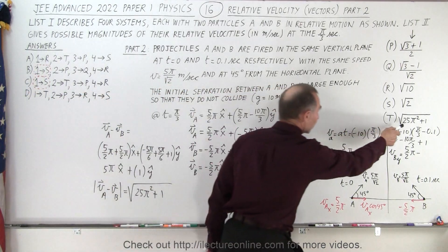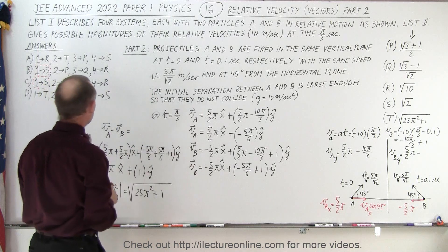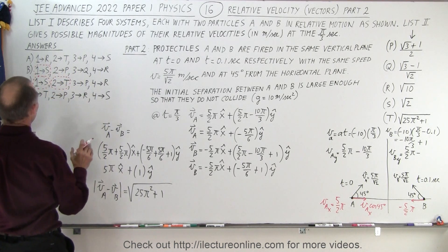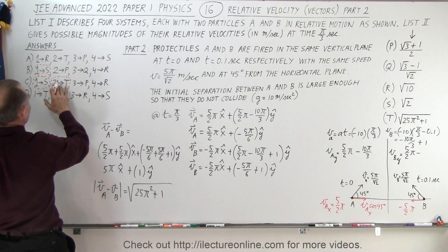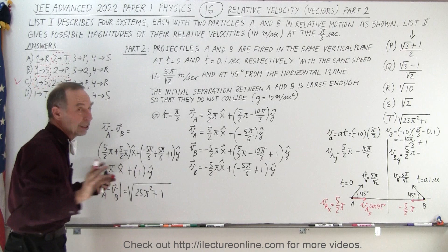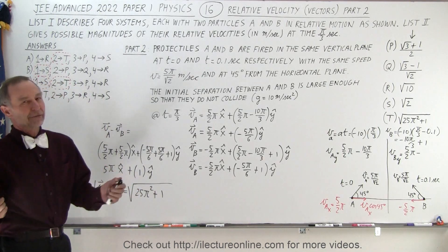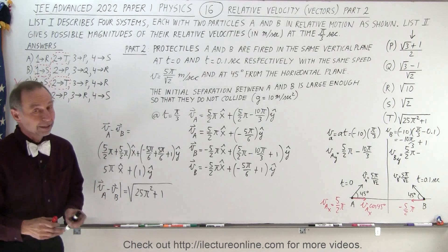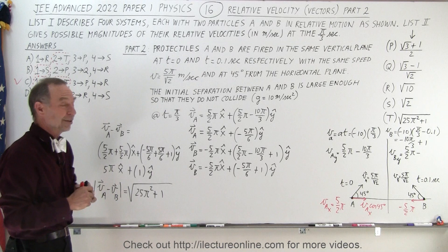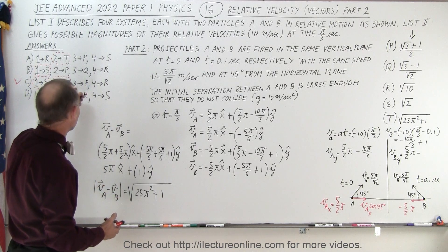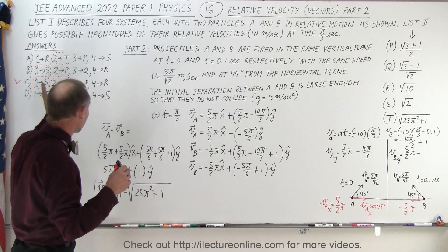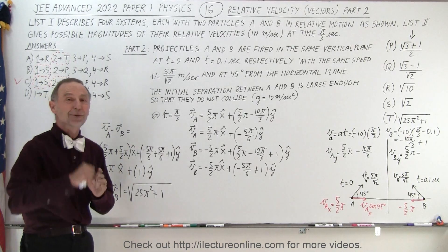That matches answer T for part 2. Looking at the answer choices, option C has both the answer for part 1 and the answer for part 2. None of the others satisfy both, so C is the answer and we don't need to go any further. For the benefit of viewers we will also do parts 3 and 4, but if you were taking the test you would stop here, mark C, and move on. For part 3 the answer is P and for part 4 the answer is R. Stay tuned and we'll do part 3 next.